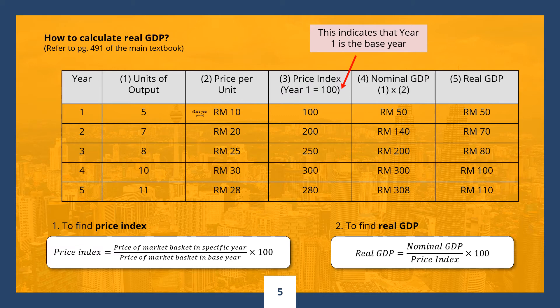For instance, to find the price index for year 2, we simply divide RM20 by RM10 and multiply by 100. We will then get a price index of 200. You may try to do the calculations for the price index for years 3, 4, and 5. Next, to find the real GDP for a particular year, we take the nominal GDP of that year and divide it by the price index we calculated earlier for that year, and multiply by 100. For instance, to find the real GDP for year 3, we simply divide RM200 by RM250 and multiply by 100. This will give us a real GDP of RM80.